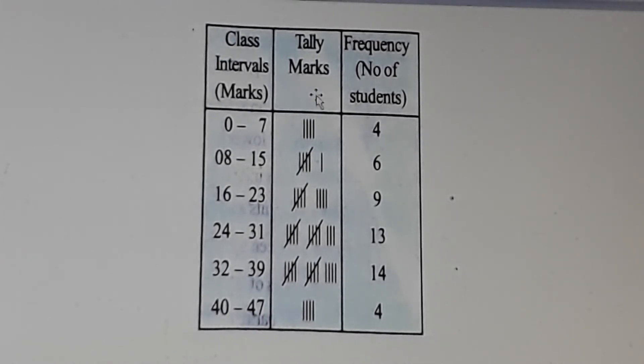Tally marks. You know the tally marks. How to write the tally marks? Frequency, number of students: 0 to 7 is 4, 8 to 15 is 6, 16 to 23 is 9.